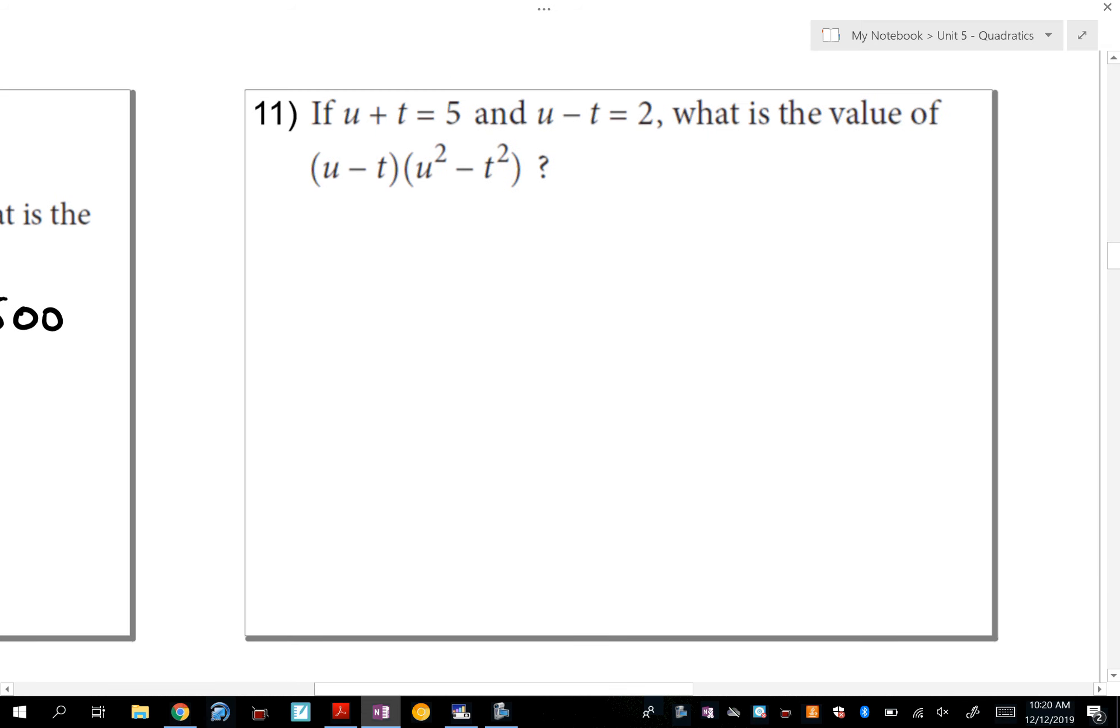Okay, number 11. Number 11. If u plus t is 5 and u minus t is 2, what is the value of u minus t times u squared minus t squared? And again, this is alarm bells going off in my head when I read this problem that this right here is the difference of two squares. So I'm going to factor that. I'm going to write down the original u minus t. And then factoring u squared minus t squared, if I take the square root of these, you get u and t. And then you just have to make one of them minus and one of them plus. So now if I use the problem to plug in numbers for these, it says u minus t is 2, then u plus t is 5. So if you do all that, 2 times 2 times 5, you get 20. So the value of all of this is 20.